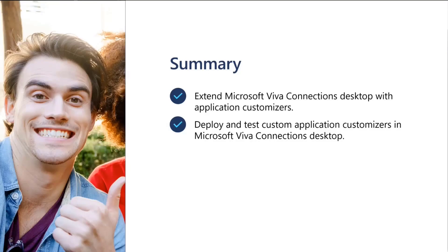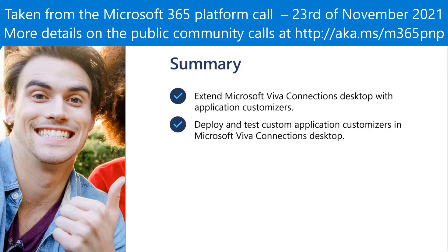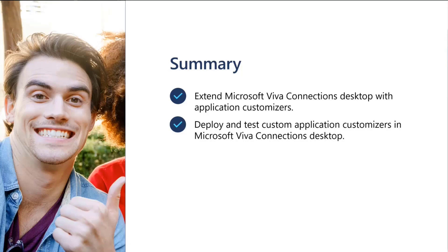To close out — we created the application customizer and extended the Viva Connection desktop. It does not work in the mobile experience, as mobile is for adaptive card rendering only. Today we did the deployment and testing of the application customizer in the Viva Connection desktop. We tested it using debug URL manipulation directly; there's also documentation on how to do it from the serve.json. That's everything for this demo.